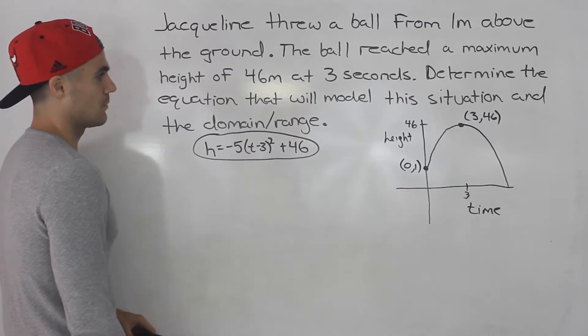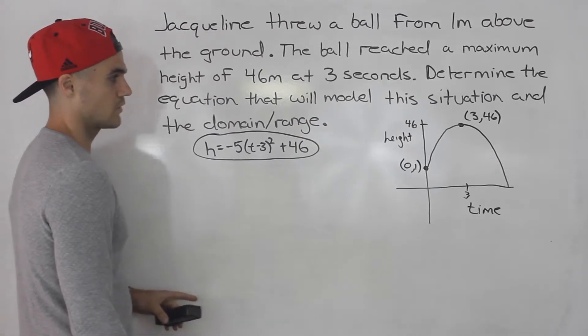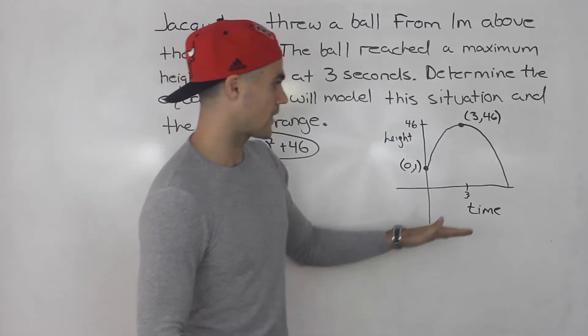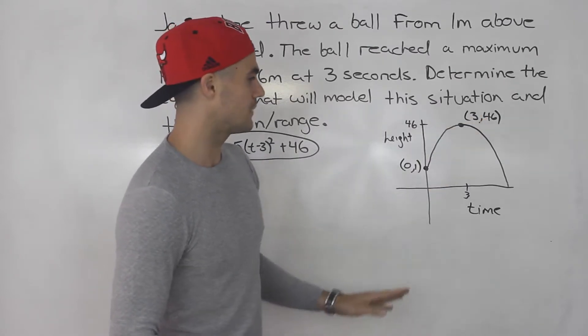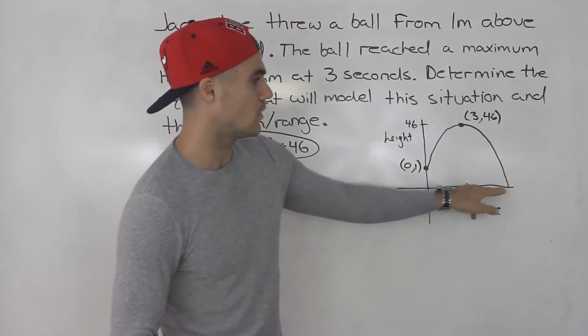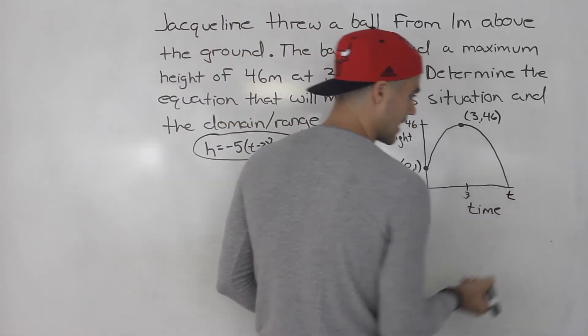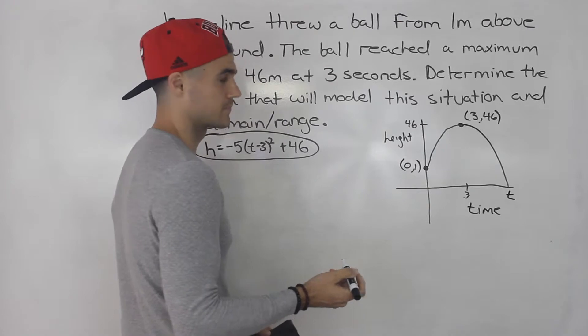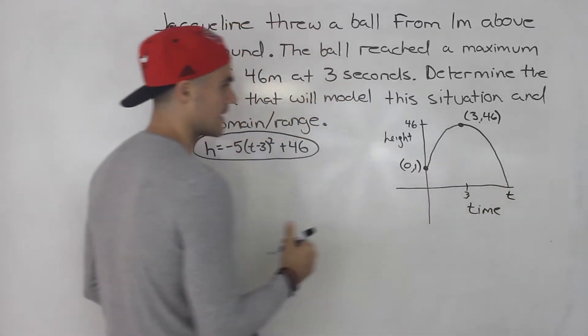Now they're asking for the domain and range. In fact the range we already know. If you look at this the range is from 0 to 46. But the domain we don't know because we don't know when the ball hits the ground. We have to solve for this t value here, the time at which the ball hits the ground. And then we know the domain is going to be from 0 to that time.